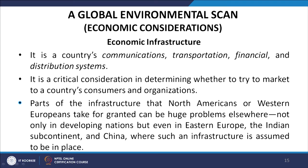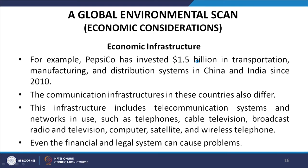A country's communication, transportation, financial, and distribution system is called its economic infrastructure. It is a critical consideration in determining whether to try to market to a country's consumers and organizations. Parts of the infrastructure that North Americans or Western Europeans take for granted can be a huge problem elsewhere — not only in developing nations, but even in Eastern Europe, the Indian subcontinent, and China. For example, PepsiCo has invested $1.5 billion in transportation, manufacturing, and distribution systems in China and India since 2010.